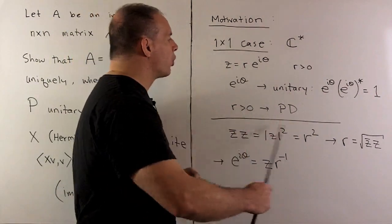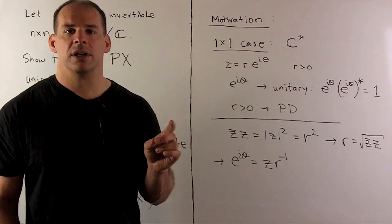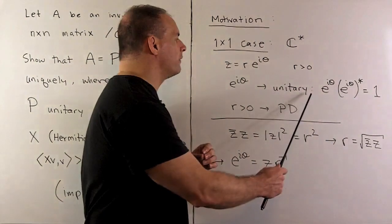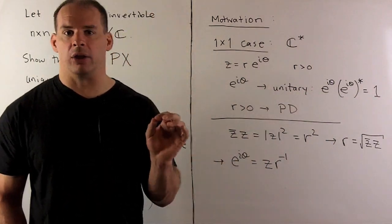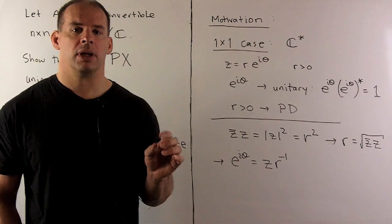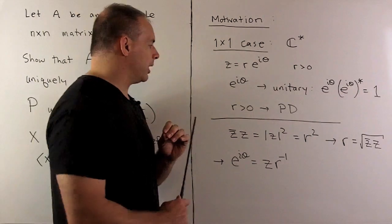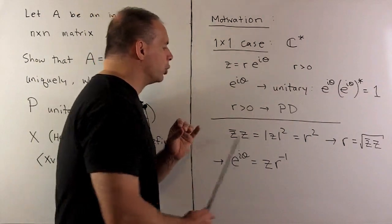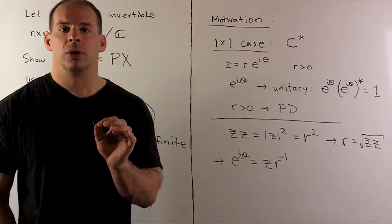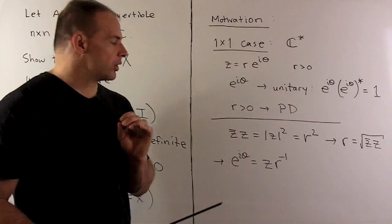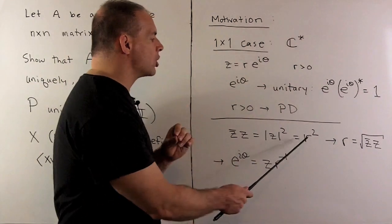There is common ground here with our other factorization: in that case we still use e to the i-theta as the unitary factor, but now r stands in for our upper triangular matrix. To decompose a complex number — and this will be our blueprint for how we factor our matrix — we first solve for r. We take z times its complex conjugate, which gives us the modulus squared, which is r squared.